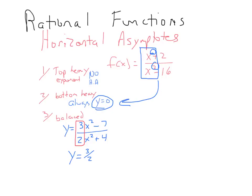And if it's top-heavy, if the top is like an x cubed over an x squared, that would not ever have a horizontal asymptote. So we would say there's no horizontal asymptote.